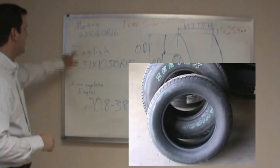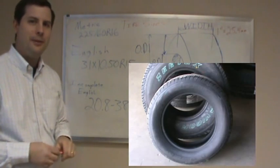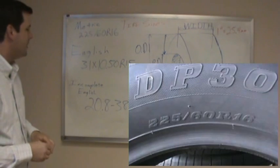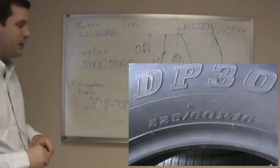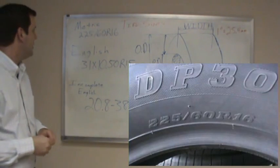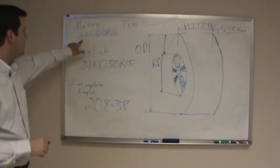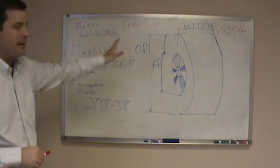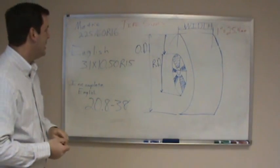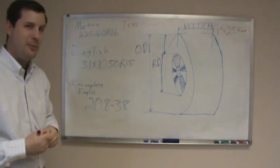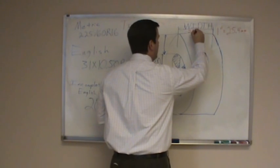In the first one, I've got a metric size: 225/60-16. This is a little bit older touring tire, but still a very common size and a very good seller. The 225 is actually the width of the tire, measured from sidewall to sidewall, and that 225 is in millimeters.